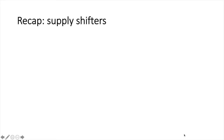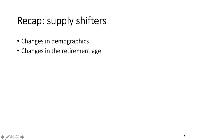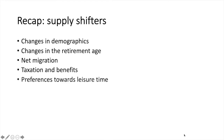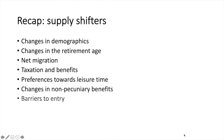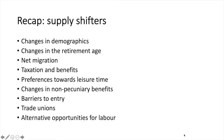Similarly, for supply shifters, go back and review the earlier video to understand why exactly these factors would cause labour supply to shift. The supply shifters include changes in demographics, changes in the retirement age, net migration, taxation and benefits, preferences towards leisure time, changes in non-pecuniary benefits, barriers to entry, trade unions, and alternative opportunities for labour.